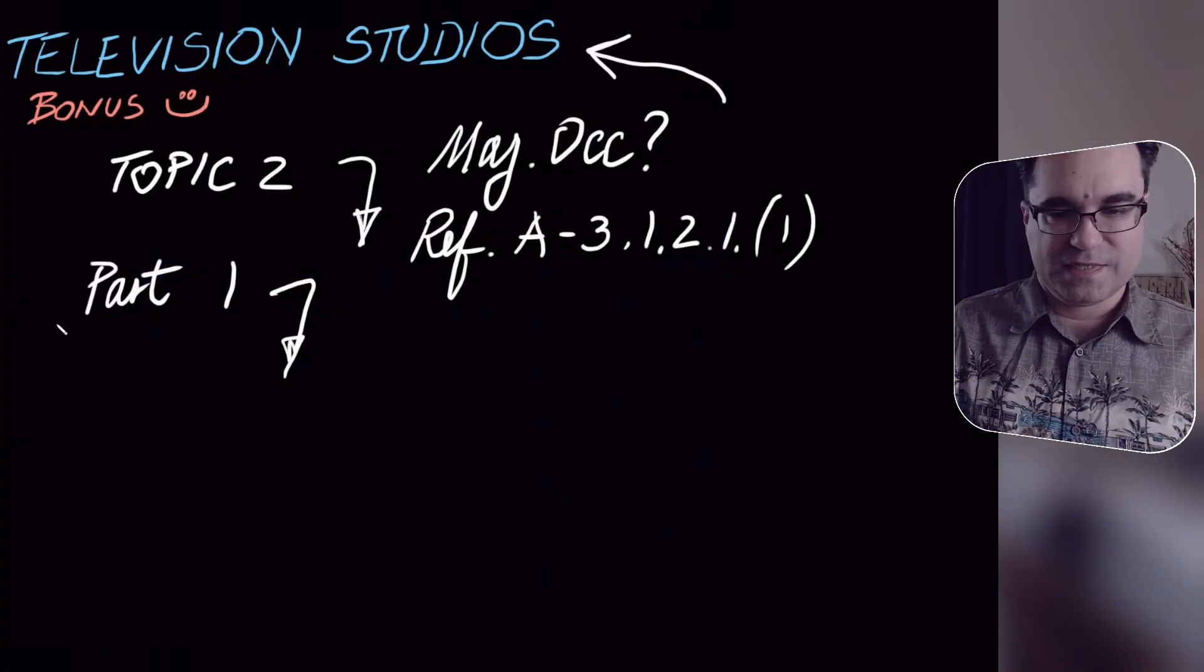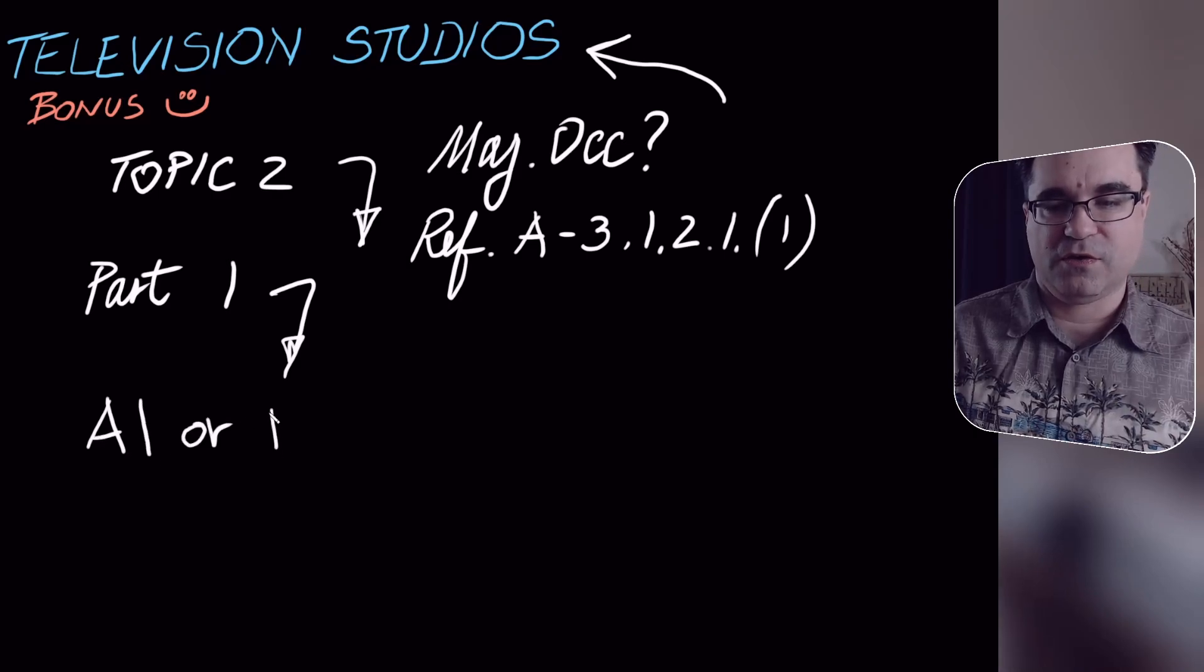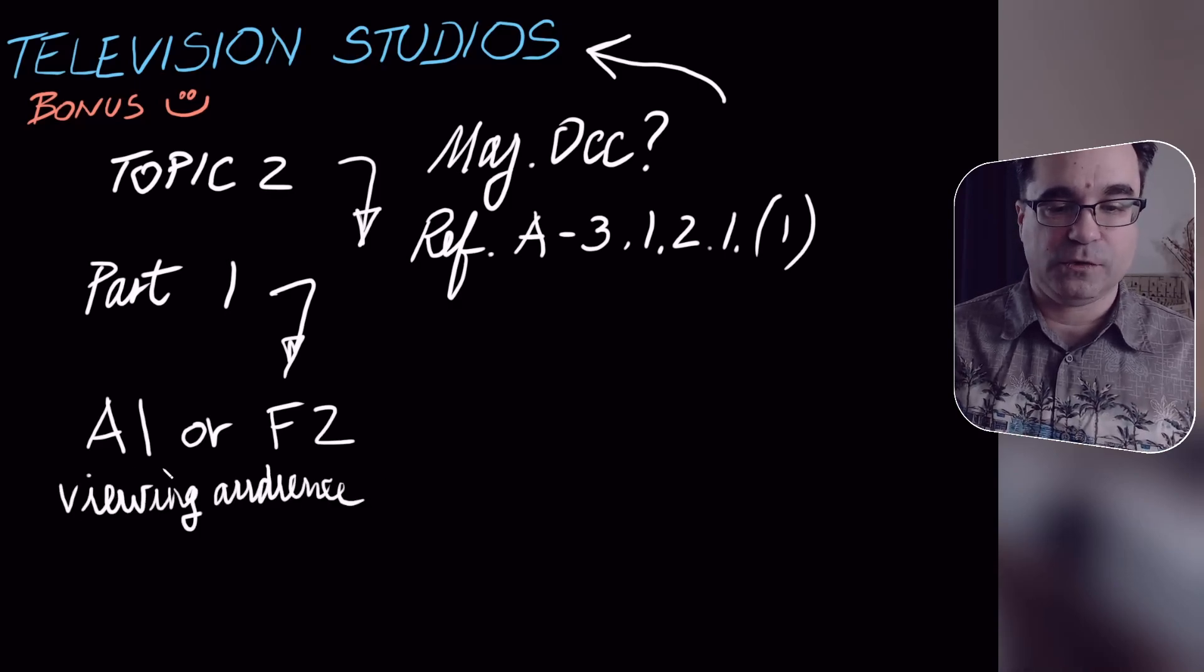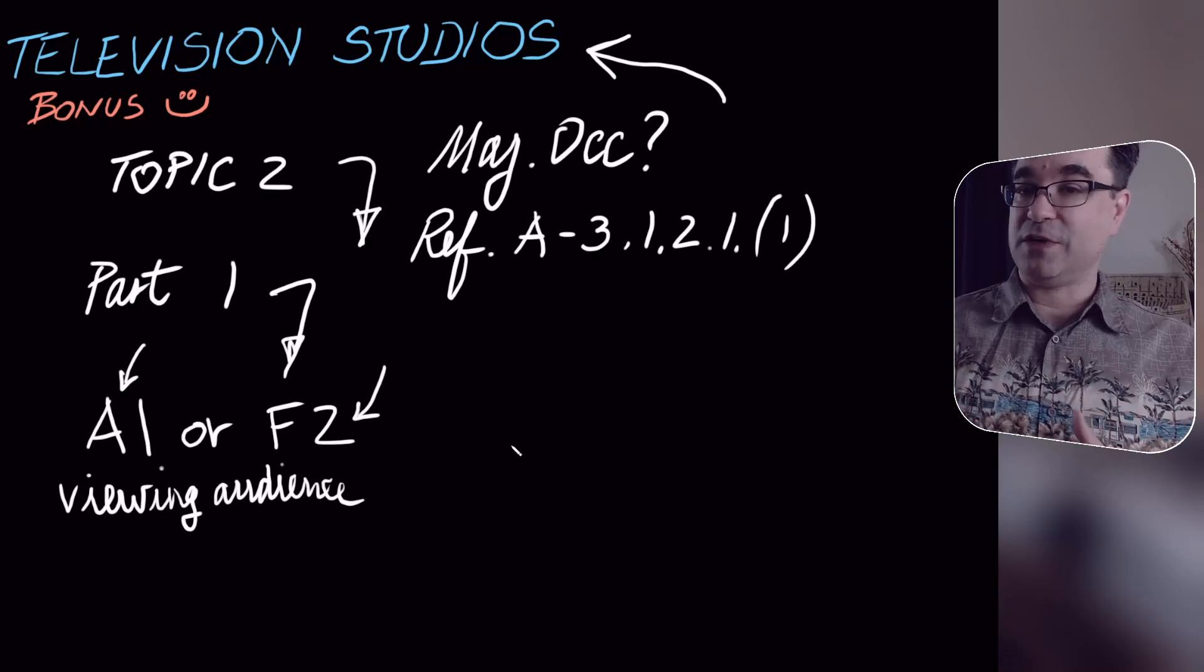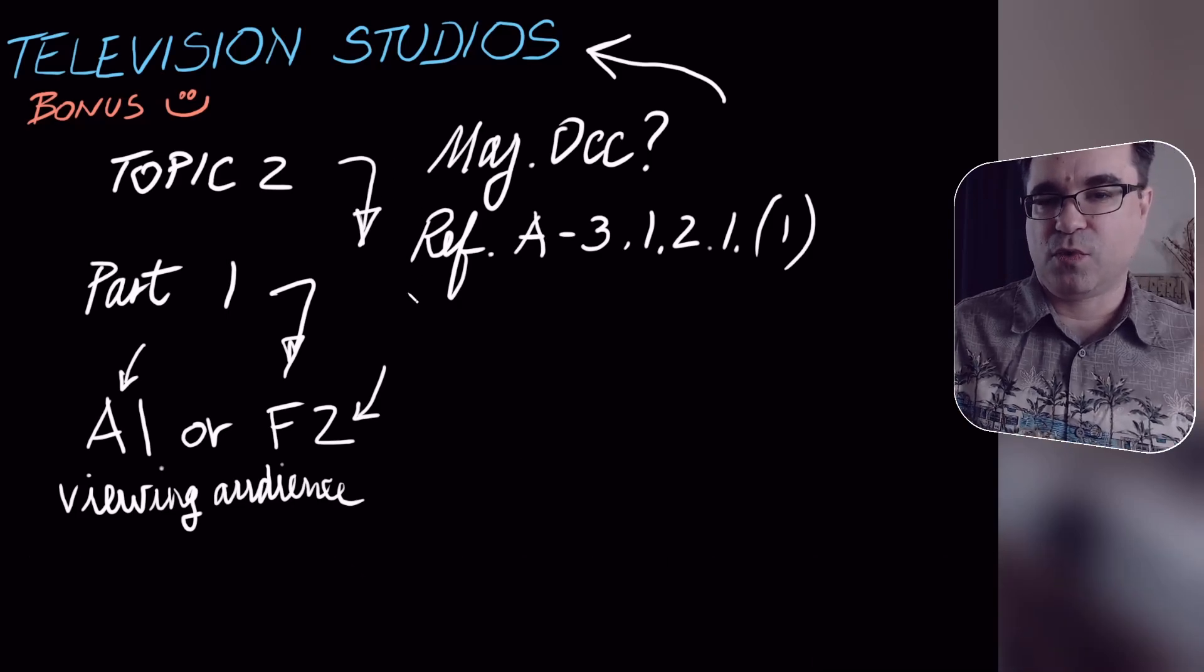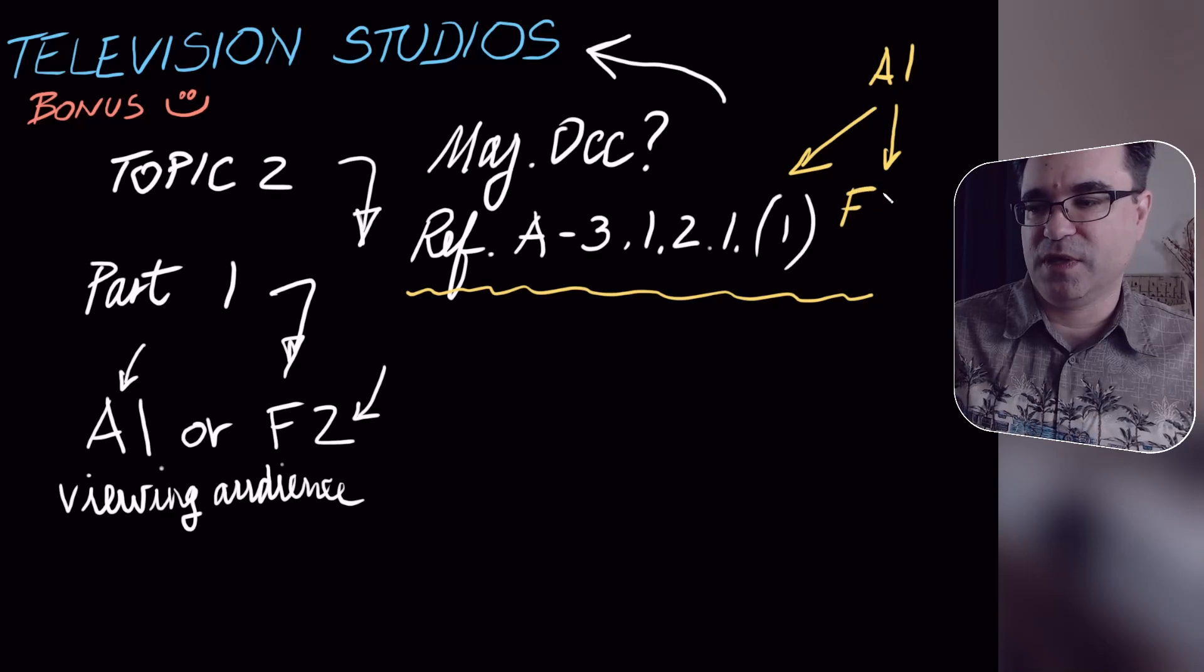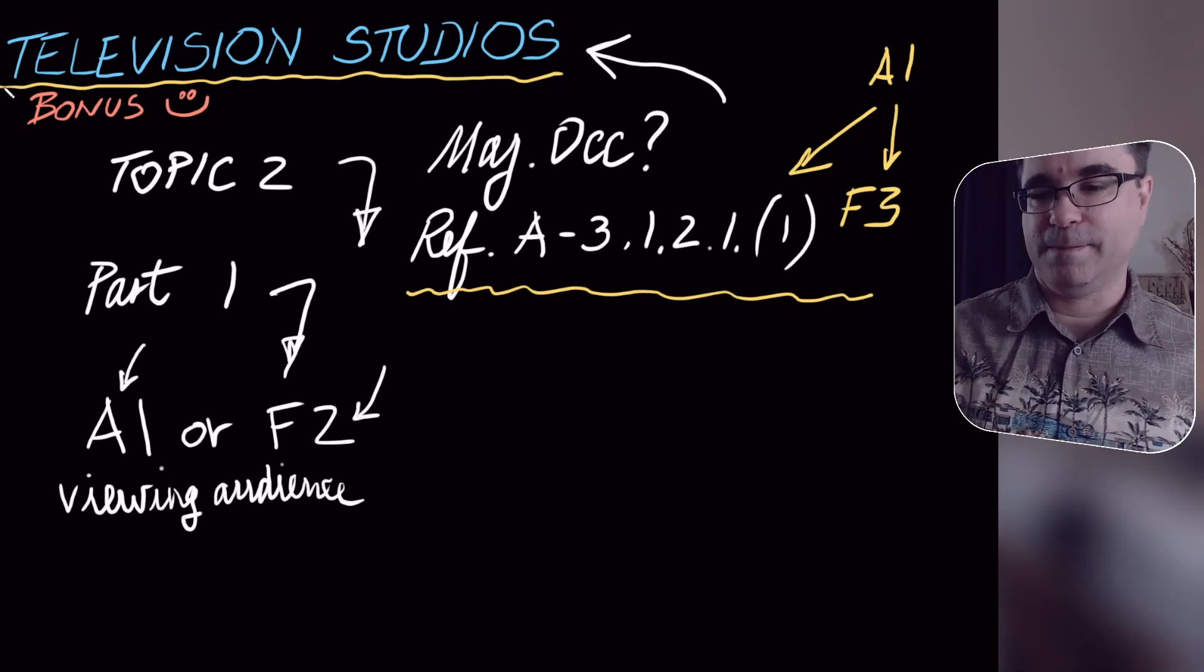So to summarize this, we have two options. We have A1 or F2. And it's all dependent on whether or not a viewing audience is allowed. If a viewing audience is allowed, then it's A1. If not, then it's F2. So that's the whole point of why we always check everything, everything under our reference here in appendix A. That's why we always read everything from A1 all the way to F3 because certain building uses may appear under more than one major occupancy.